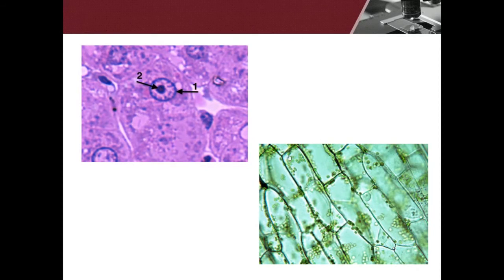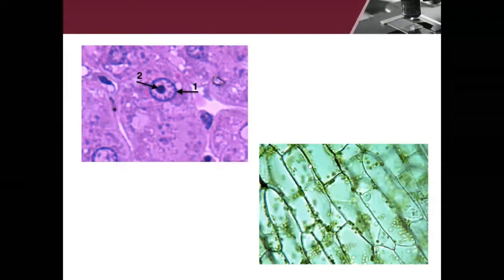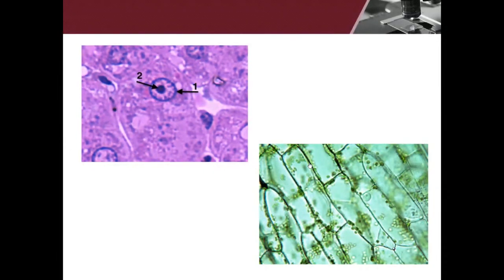Does anybody know what these other little compartments are called? Chloroplasts — that's right, and they're green. Do you think we would say these cells are photosynthetic or non-photosynthetic? Likely, right? We can't say for sure, but because they're green, we're probably going to say that they're photosynthetic. I want to show you this video because this is something you would see under the microscope if you were to actually get a chance to do this.